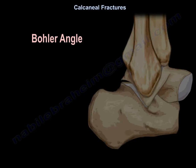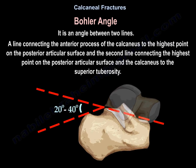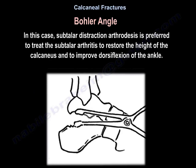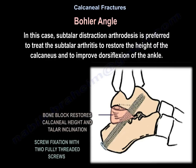Böhler's angle: the normal Böhler's angle is 20 to 40 degrees. It is the angle between two lines — a line connecting the anterior process of the calcaneus to the highest point on the posterior articular surface, and a second line connecting the highest point on the posterior articular surface to the superior tuberosity. Collapse of the posterior facet will decrease or flatten the Böhler's angle. In that case, a subtalar distraction arthrodesis is preferred to treat subtalar arthritis and restore the height of the calcaneus.